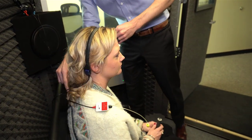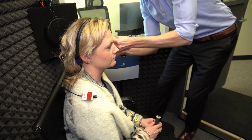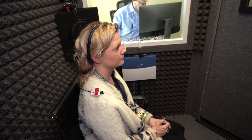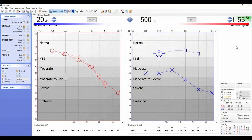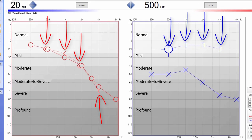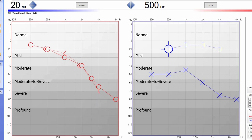This will vibrate your skull at the same frequencies that were tested during air conduction testing that gave us the X's and O's. When you hear the beeping sounds, you will raise your hand or click a button just like you did with air conduction testing. The results of bone conduction testing are recorded on your audiogram as brackets.